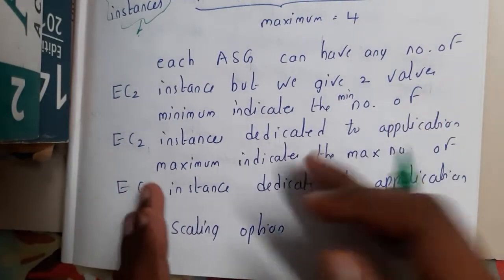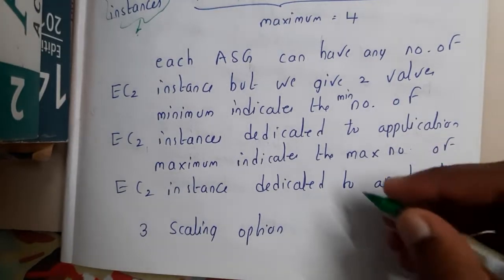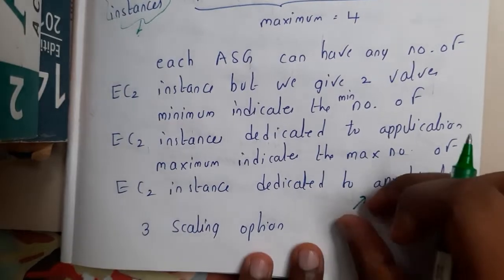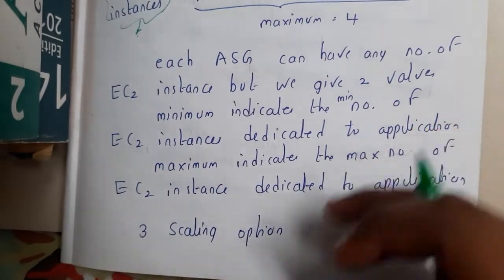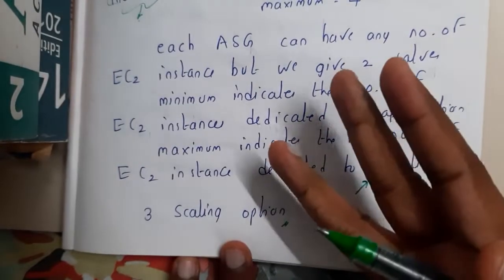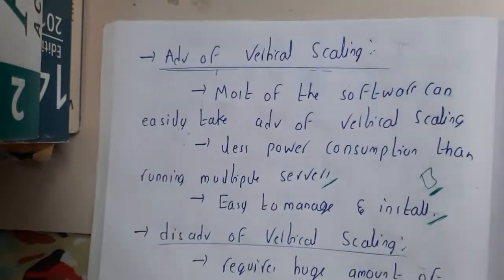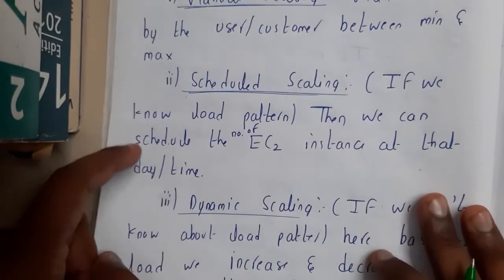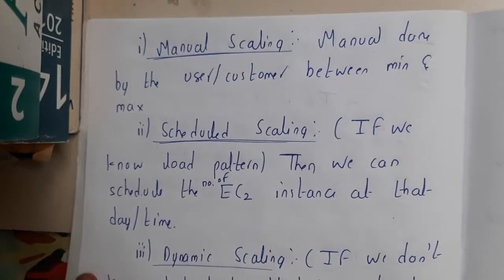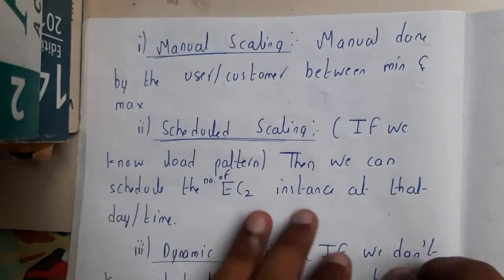Maximum indicates the upper limit of instances you can reach. If traffic is unexpectedly overloaded, the server may slow down, but until that point it gives the best performance. There are three types of scaling options: the first is Manual, the second is Scheduled, and the third is Dynamic.